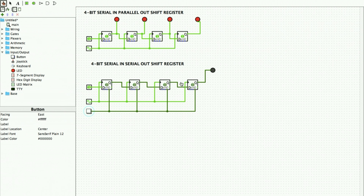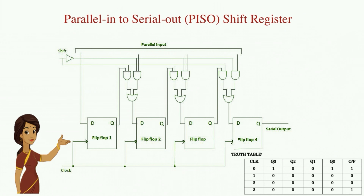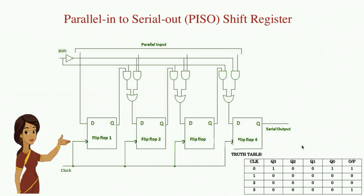In a parallel input serial output shift register, parallel data is loaded into the register simultaneously and then shifted out of the register serially, one bit at a time, under clock control. We will implement this using Logisim software and verify the truth table.